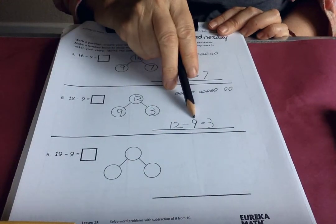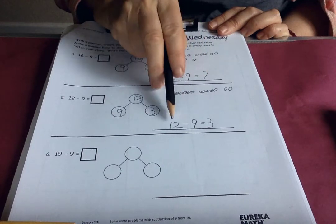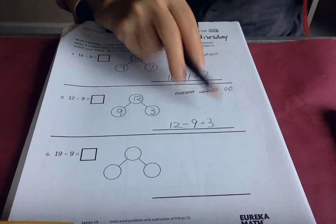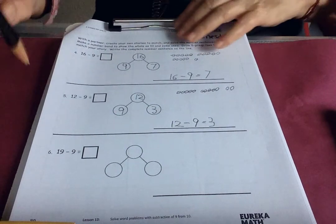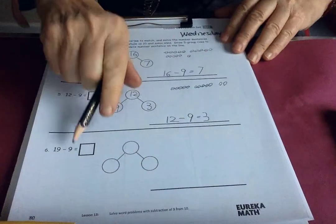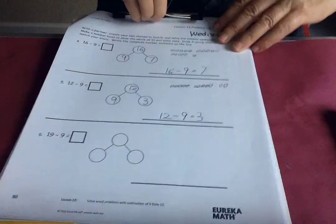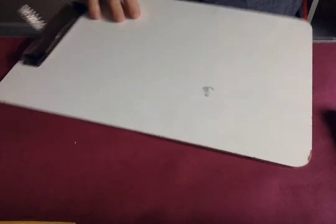Twelve take away nine equals three. Twelve take away ten would be two. Twelve take away nine is three. I'm going to let you do the last one by yourself.